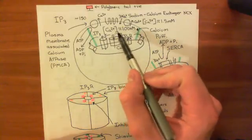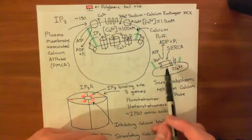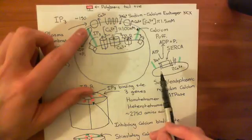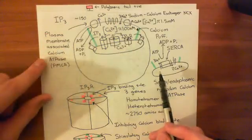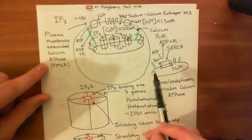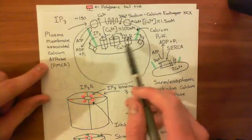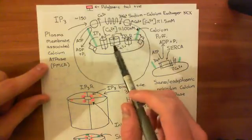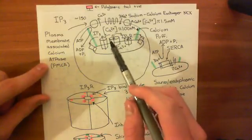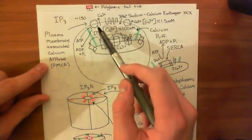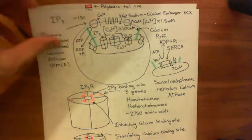Some of the calcium was then returned into the ER by the sarco/endoplasmic reticulum calcium ATPase, and some was pumped out of the cell by the plasma membrane-associated calcium ATPase. So overall, once this process has finished, you've lost calcium from the endoplasmic reticulum, because the amount returned back in is less than the amount released — some was pumped out of the cell by the plasma membrane-associated calcium ATPase. Overall, that means the calcium concentration in the ER goes down.